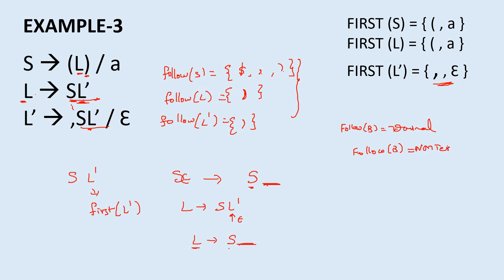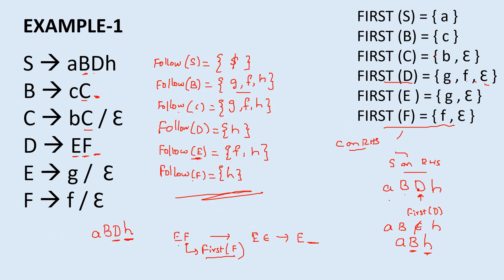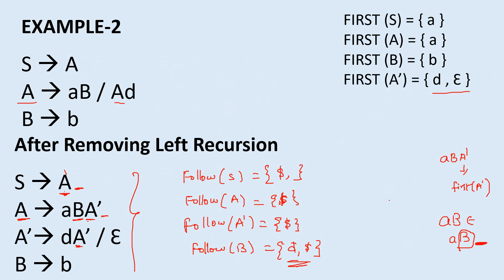To summarize: if the follow of a non-terminal is a terminal, simply include that terminal. If it is a non-terminal, find the first of that non-terminal. If it has epsilon, apply the epsilon to the production and find the follow of the resulting new production. This is how we find the follow set for any grammar. Hope you understood — feel free to post any doubts in the comments. Please like, share, and subscribe. Thanks for watching!